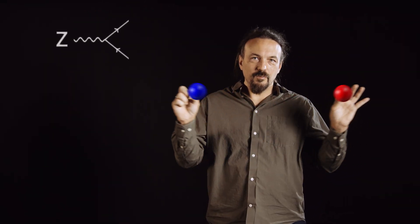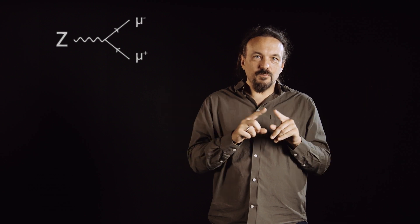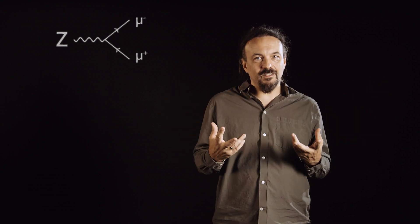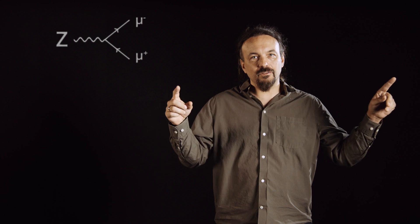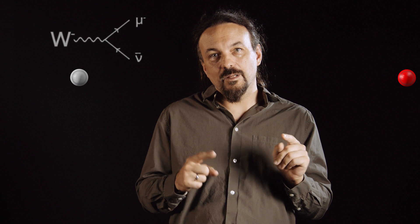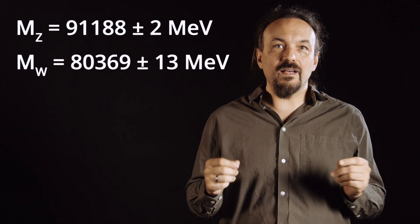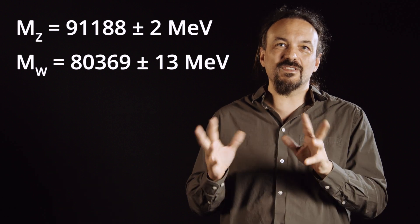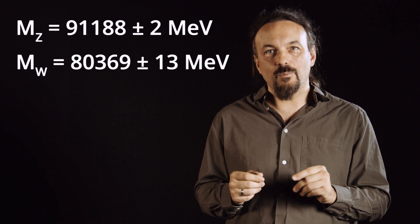Now, what do I mean by that? The Z boson decays into two muons, and these muons can be measured very precisely in a particle detector. And from this measurement, we can establish the mass of the Z. Now, the W boson decays into one muon and one neutrino. And the muon can be measured precisely, but the neutrino cannot. And so we currently know the mass of the Z boson with a precision about seven times better than the mass of the W.